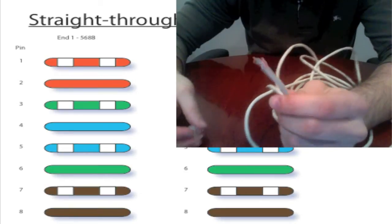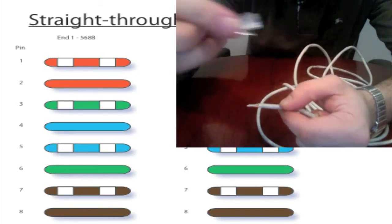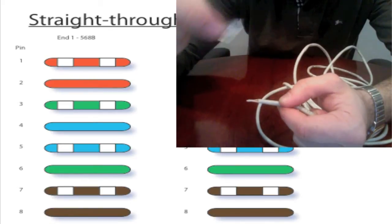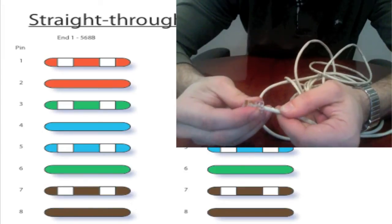Now we're going to go ahead and take our RJ45 connector with the clip facing down. Now all we have to do is insert the cable making sure our wires line up with our pins.